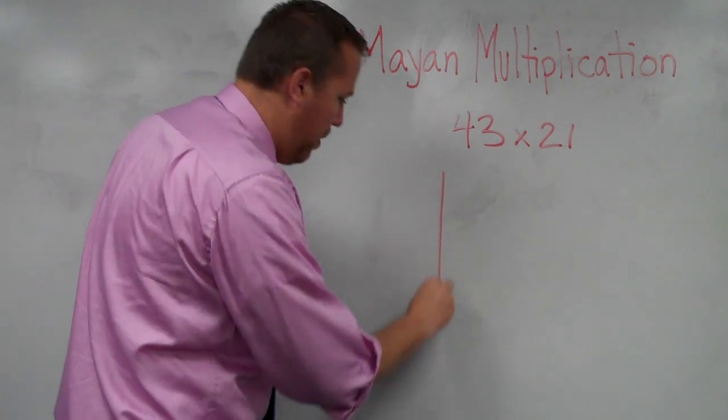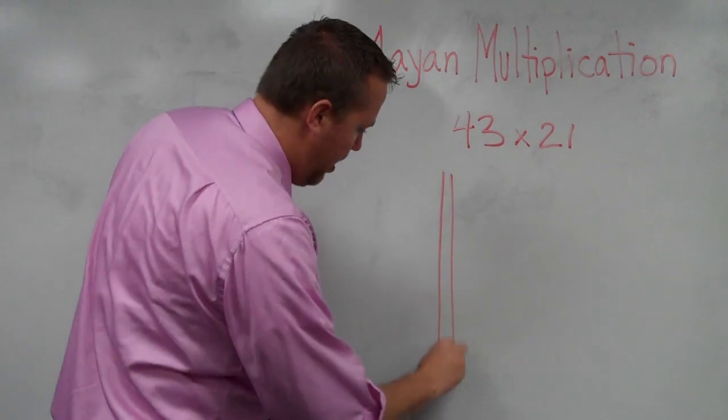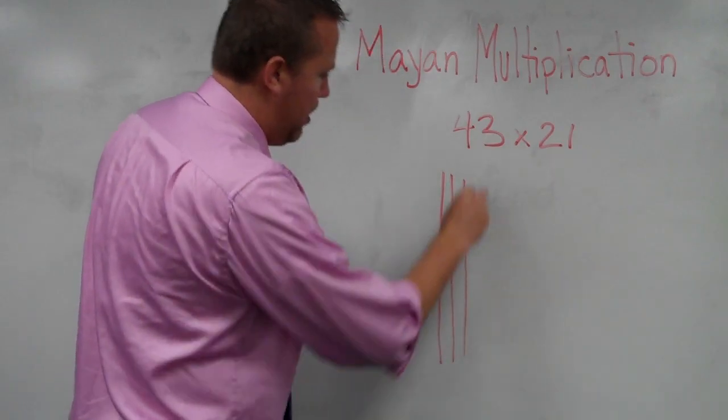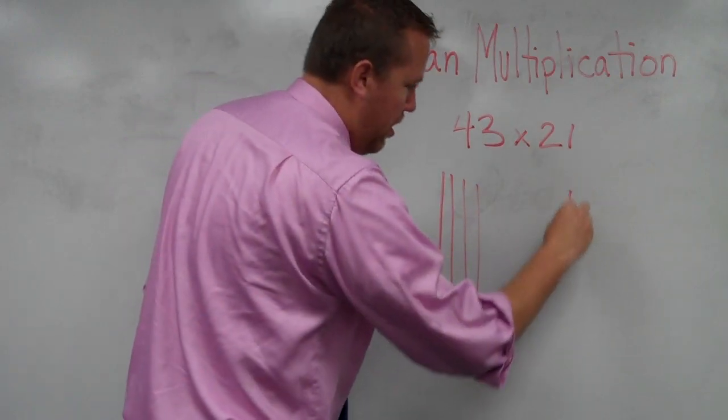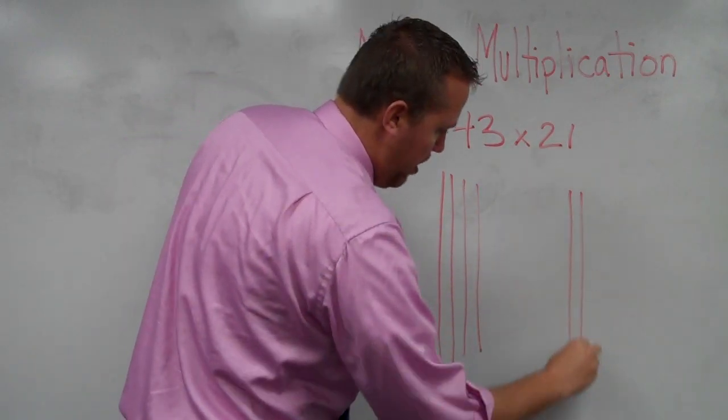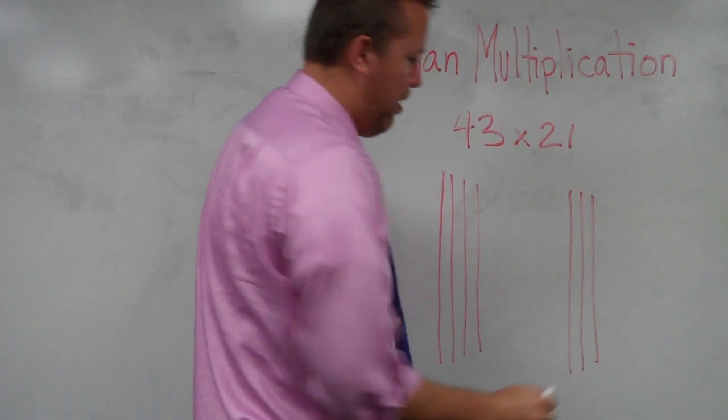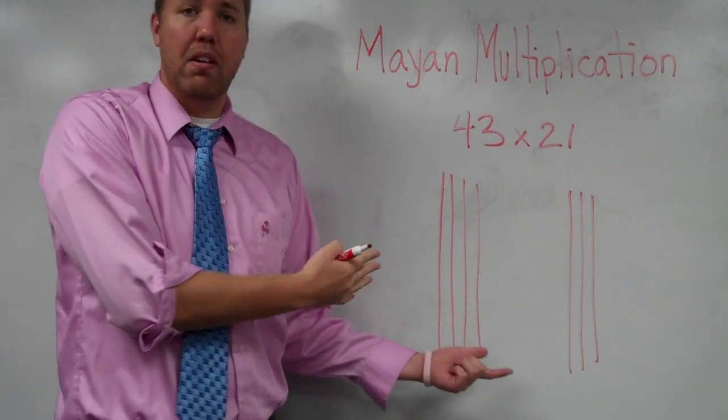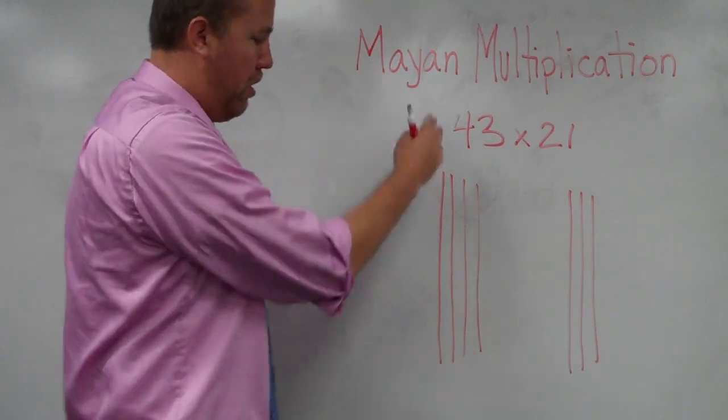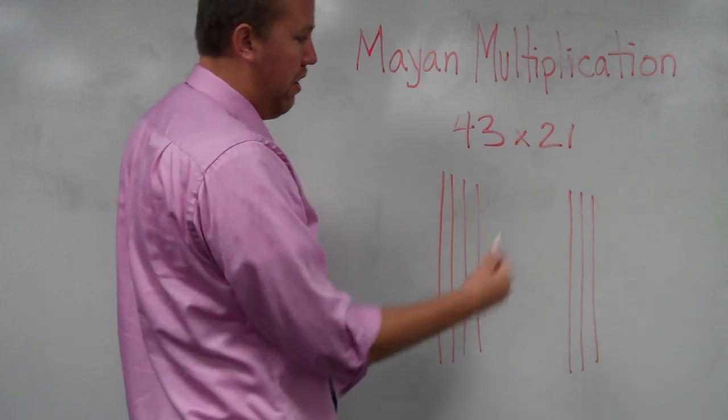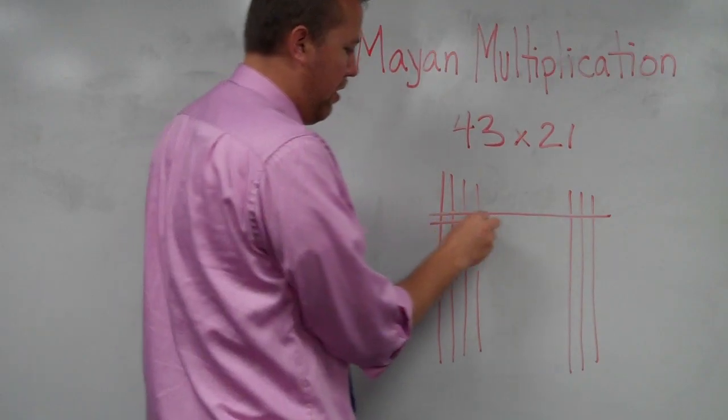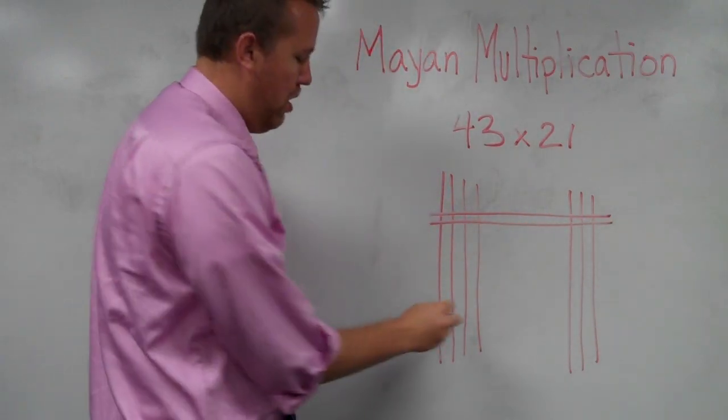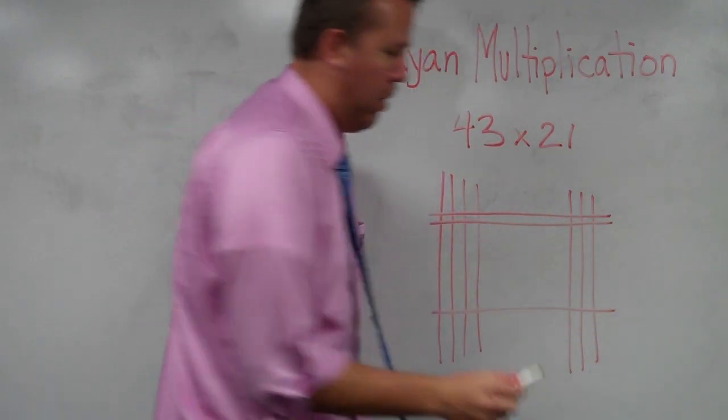That's 4 tens and 3 ones. The way we do that is drawing nice long lines. 4 tens and 3 ones. Now hopefully you can see how this could be 43. And we start with vertical lines going down, and then 21 we do the same thing but across. That's a good marker right there. 2 and 1.